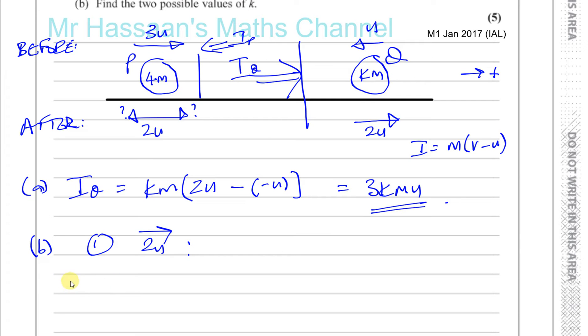We know that the impulse received by P is minus 3KMU, because it has to act to the left. I've taken right positive. So we know that minus 3KMU is equal to the mass of P, which is 4M, times the change in its momentum. If it was going 3U initially, and if it's going 2U to the right, it's still positive. So you've got 2U minus the initial velocity of speed, which is 3U.